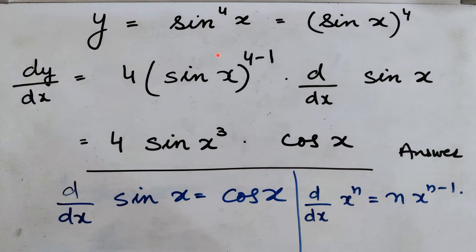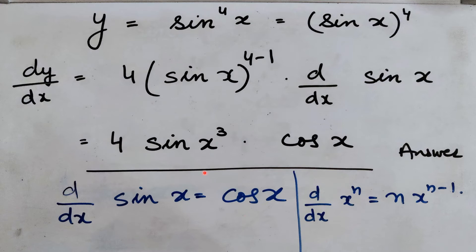Now we will find the derivative, differentiating both sides with respect to x. We get dy/dx — how will you treat (sin x)⁴? The formula used will be d/dx of xⁿ = n·xⁿ⁻¹. Wherever x is written, substitute sin(x). So 4 comes to the front: 4·(sin x)⁴⁻¹, multiplied by the derivative of what's in the bracket. You get 4·sin³(x) multiplied by the derivative of sin(x), which is cos(x). So the answer is 4·sin³(x)·cos(x).